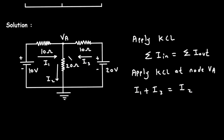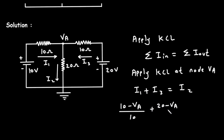Now we will write these in voltage forms. I1 will be equal to 10 minus VA divided by 10. Then plus I3, which will be 20 minus VA divided by 10, is equal to I2. This I2 will be VA minus 0 divided by 20.